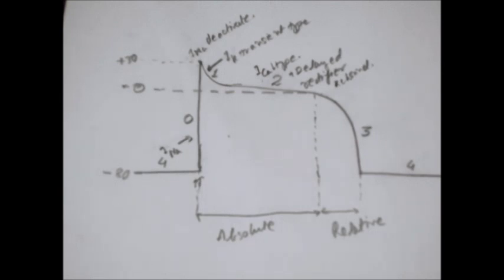In the absolute refractory period, almost all of the sodium channels are in their inactive state. That is why any type or amount of impulse can't generate any depolarization potential.